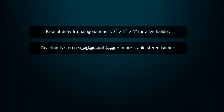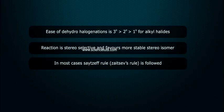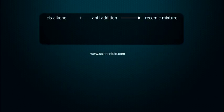Reaction is stereoselective and favors more stable stereoisomer. In most cases, Zaitsev rule is followed. Organic reaction can be stereoselective—one stereoisomer predominates over other—or stereospecific—single product formed from two geometrical isomers.